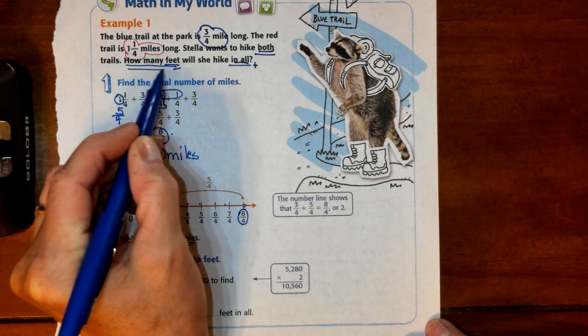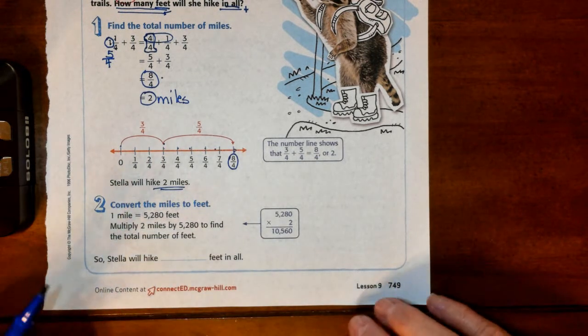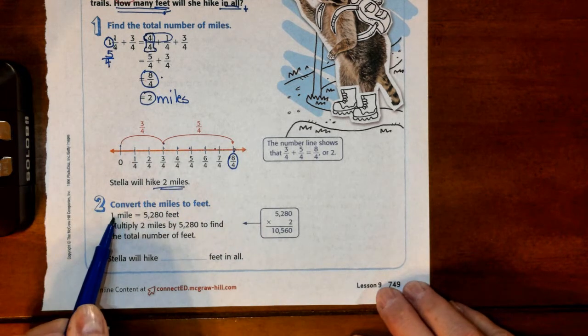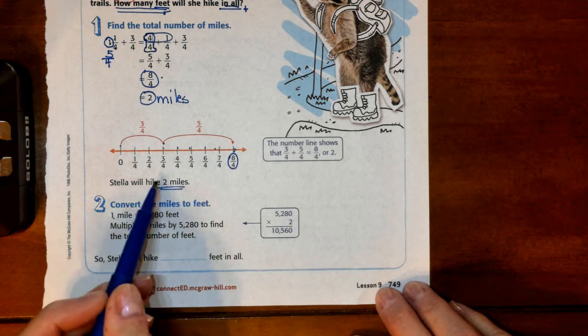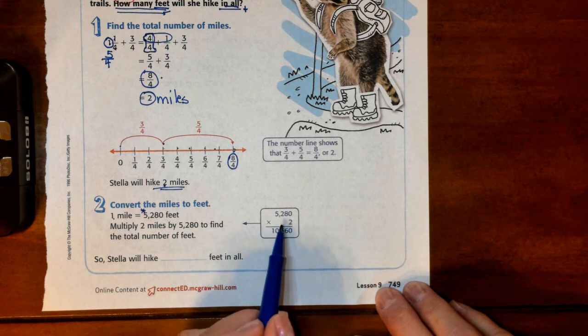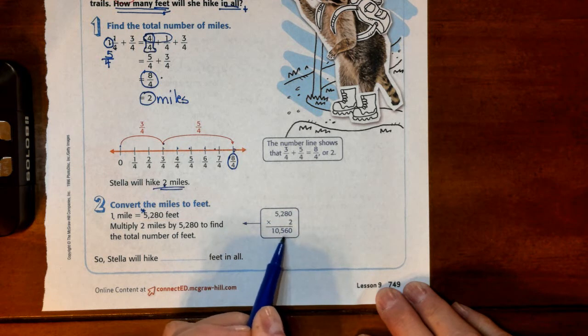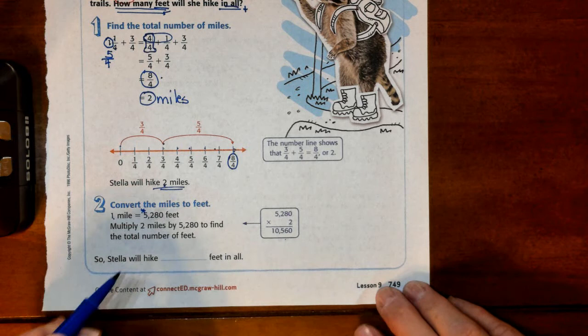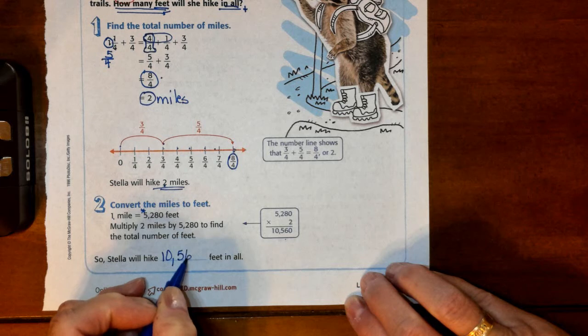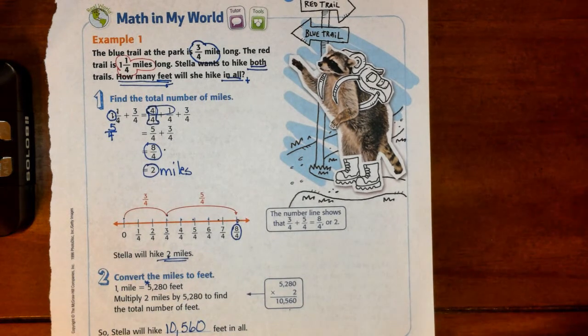So now we have to go back to our conversion, which was I don't know less than maybe 4 or 5, and we know that 1 mile is 5,280 feet. And she hiked 2, so we're basically going to have to double this number, aren't we? And they've shown it right there, they've multiplied by 2 to get 10,560 feet.